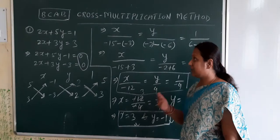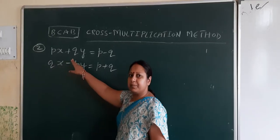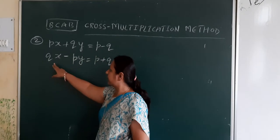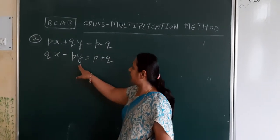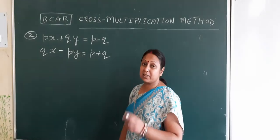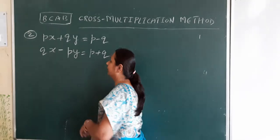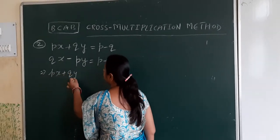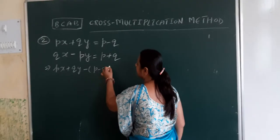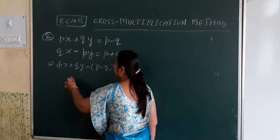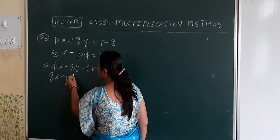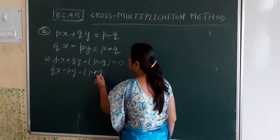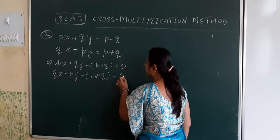So now we go to the second example. The equations are: px plus qy equals p minus q, and the second equation: qx minus py equals p plus q. The first step is to make the right hand side 0, giving px plus qy minus p plus q equals 0, and qx minus py minus p minus q equals 0.